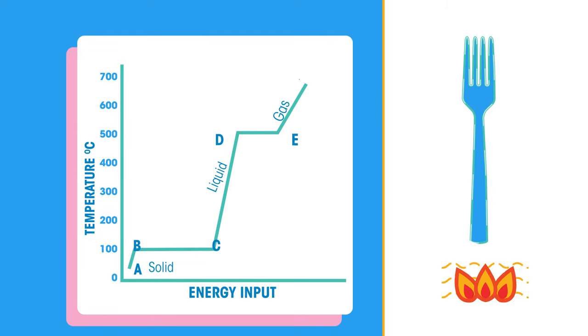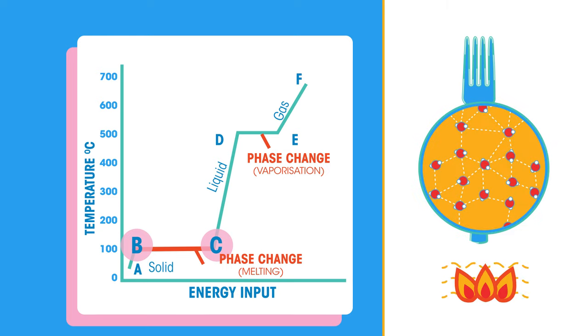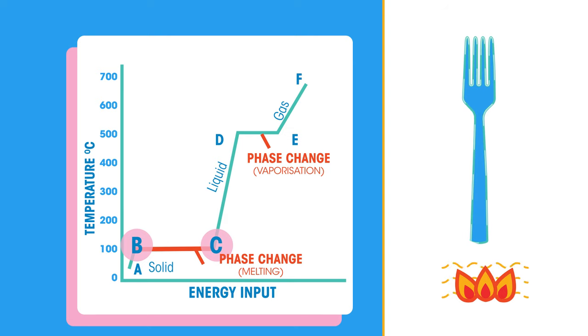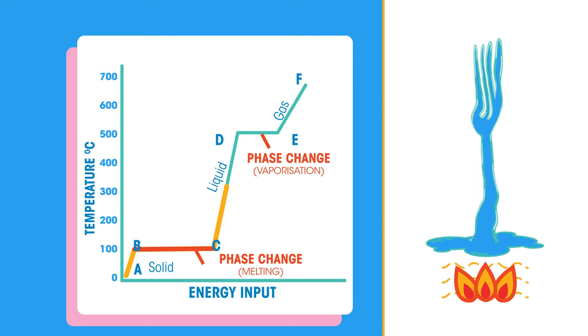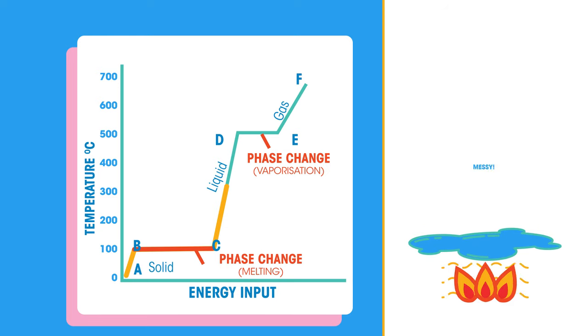If we heat up a plastic fork to its melting point, see between points B and C on this graph. The heat energy it absorbs at its melting point is busy breaking the bonds between the individual plastic molecules. Once enough bonds between molecules have been broken, the fork will melt and become liquid plastic. Messy.